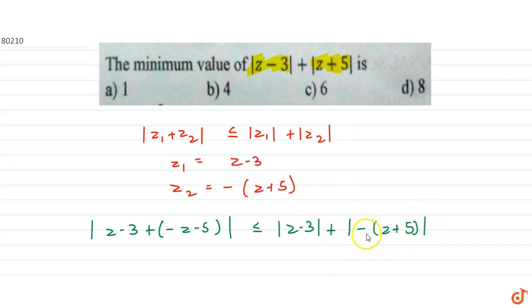Now, mod of minus of z plus 5 is mod of z plus 5. So, we get mod of z minus 3 minus z minus 5 is less than or equals to mod z minus 3 plus mod of z plus 5.